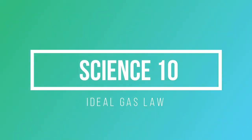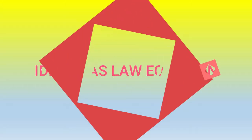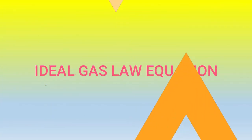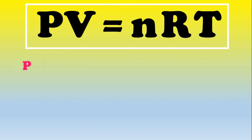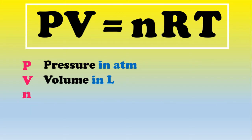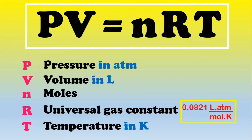The Ideal Gas Law is PV equals NRT, where P is pressure in ATM, V is volume in liters, N is the number of moles, R is the universal gas constant equal to 0.0821 liters times ATM over mole times Kelvin, and T is temperature in Kelvin.